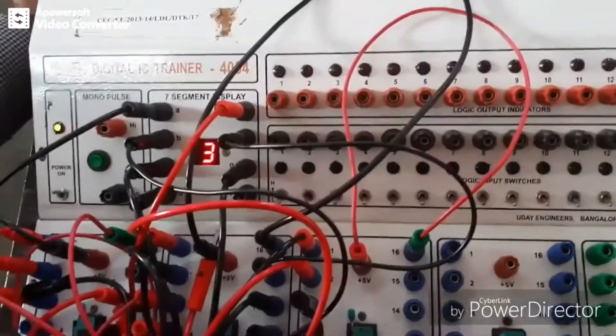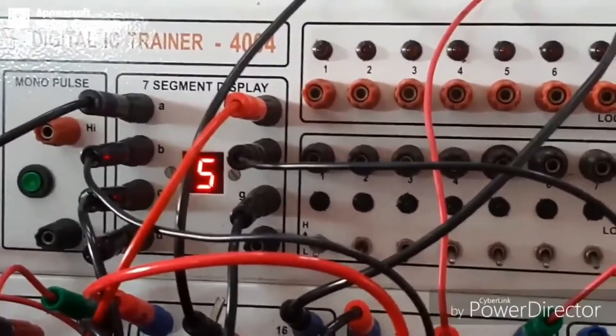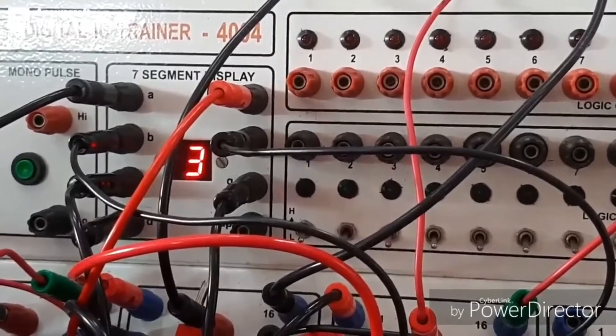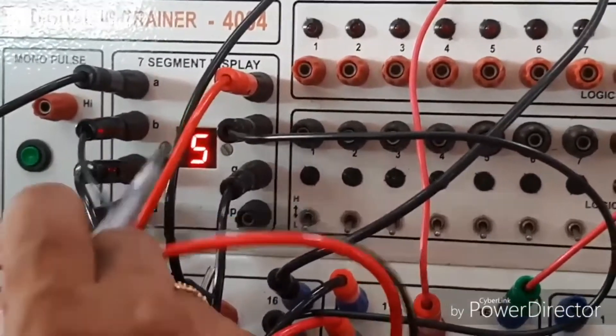So output of this one is mod 6 counter, 0 to 5: 0, 1, 2, 3, 4, 5.